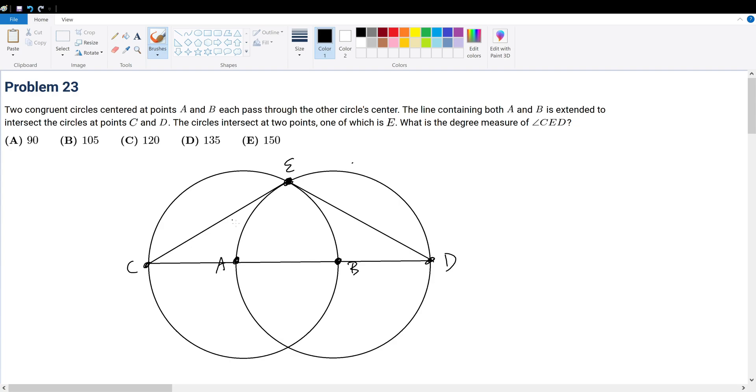Problem 23. Two congruent circles centered at points A and B each pass through the other circle's center. The line containing A and B is extended to intersect the circles at points C and D. The circles intersect at two points, one of them being E. What is the degree measure of angle CED?